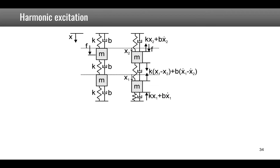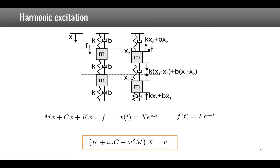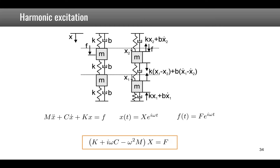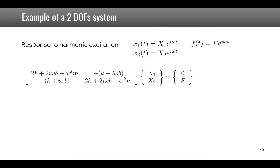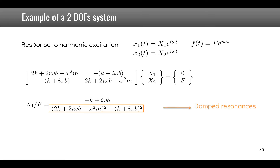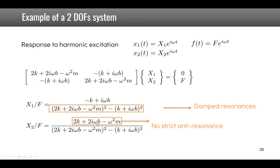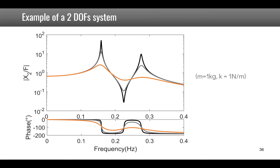Looking at the equations of motion of the two DOF system under harmonic excitation gives: (K + iωC − ω²M)X = F. Solving by substituting K, M, and C values analytically for this two DOF system leads to an expression showing damped resonances — because of the damping term it never goes to infinity. The anti-resonance is also not strict, as no real frequency cancels the numerator.